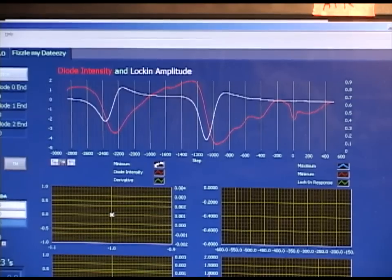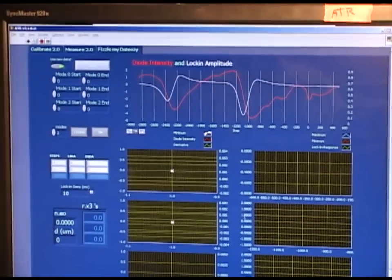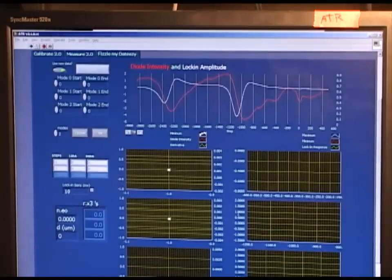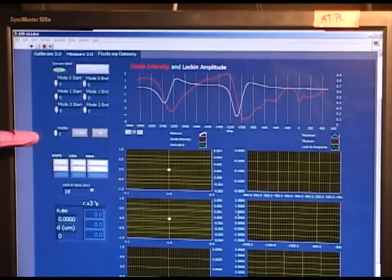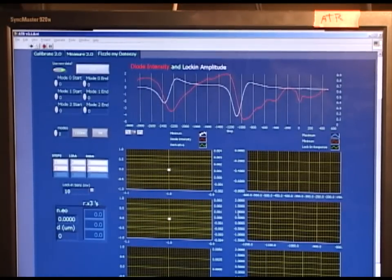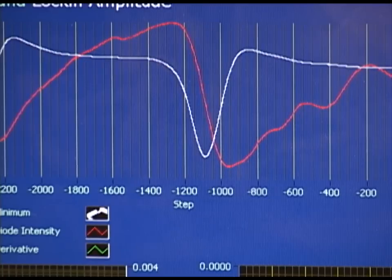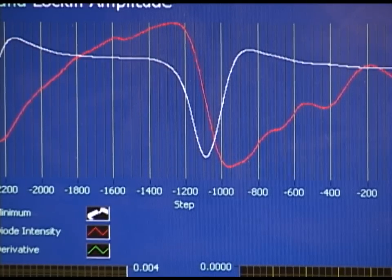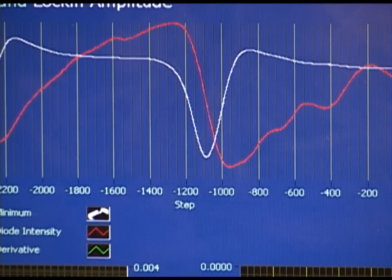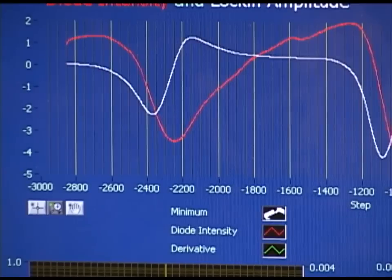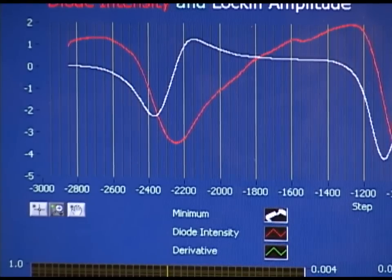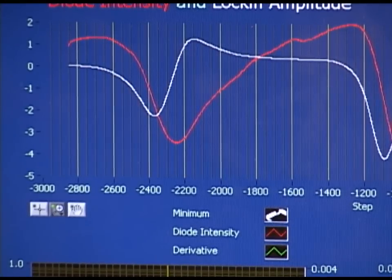To fit the data, we first want to indicate the number of modes present. Here, I see two clear modes, one here and one here. So, I will input that there are two modes. Once we have designated how many modes there are, we want to select the step numbers that correspond to these modes. I will guess a value of negative 1200 steps for the start of mode zero, and the end to be at approximately negative 900 steps. For the second mode here, I will guess the start to be at negative 2600 steps to approximately negative 2200 steps.